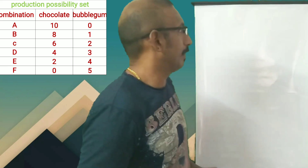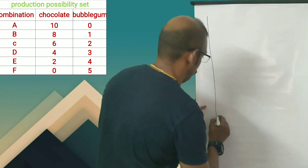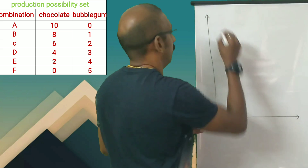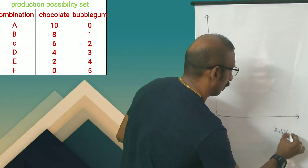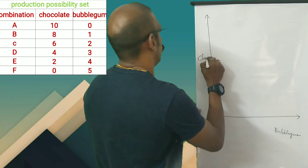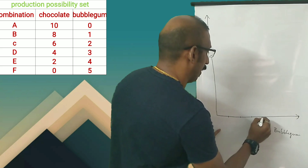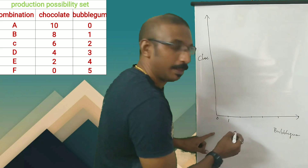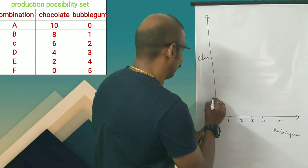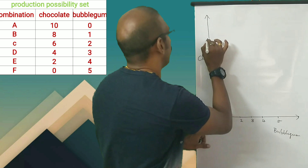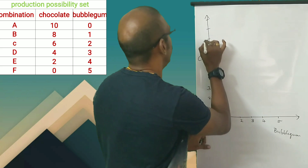Now, we have one graph. You can add x-axis and y-axis. I make the y-axis and x-axis. On the y-axis we will put bubble gum. We will put the maximum bubble gum with equal spacing: 1, 2, 3, 4, 5. Maximum chocolate is 10 — we will put in equal spacing.